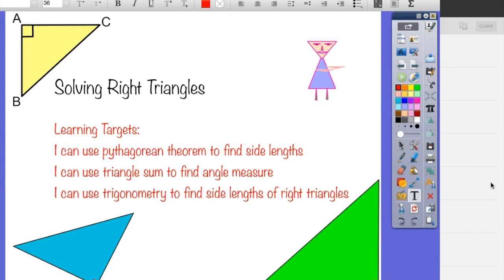Hi everyone! We are going to be solving right triangles with this lesson and our learning targets are: I can use the Pythagorean theorem to find side lengths, I can use triangle sum to find angle measure, and I can use trigonometry to find side lengths of right triangles.